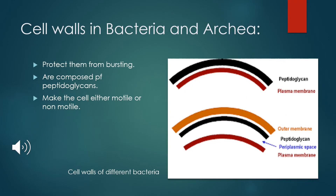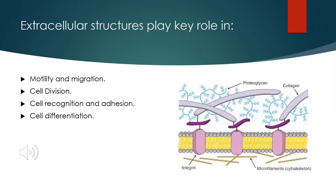Most bacteria and archaea are surrounded by an extracellular structure also called a cell wall, which is made mainly of peptidoglycans. Archaeal cell walls vary considerably from species to species — some are mainly proteinaceous, whereas others have peptidoglycan-like components. They can be either motile or non-motile, depending on their cell wall. Extracellular structures play a key role in motility and migration of the cell, cell division, cell recognition and adhesion, and cell differentiation.